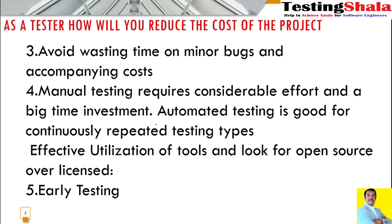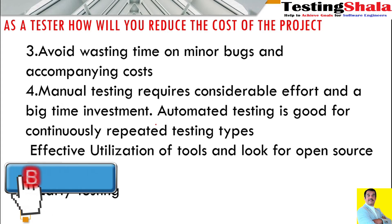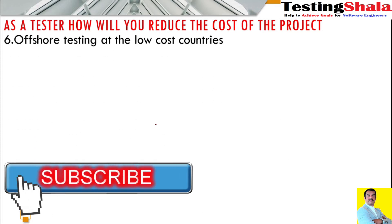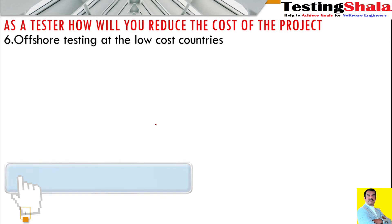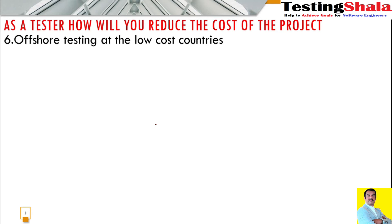The fifth aspect in reducing the overall cost of the project is we want to start our testing work as early as possible. The sixth perspective is we can offshore our testing effort to low-cost countries — for example, if a project is in the US and they want to bring the testing effort offshore to somewhere like India, then definitely the overall cost of the project will reduce.